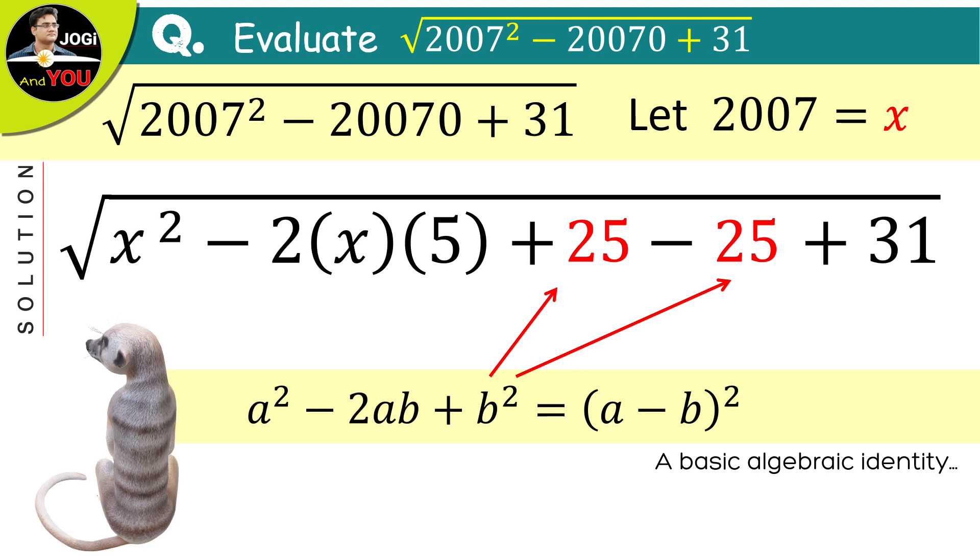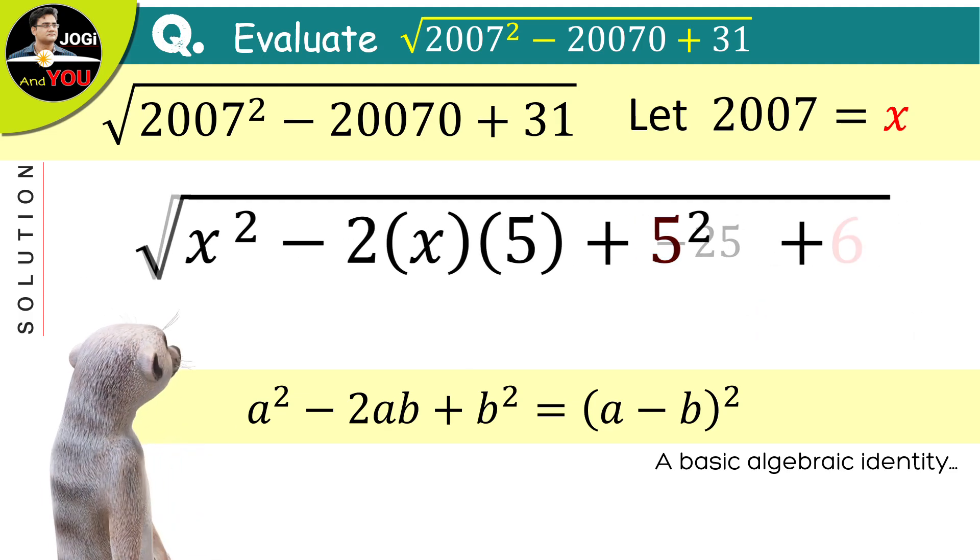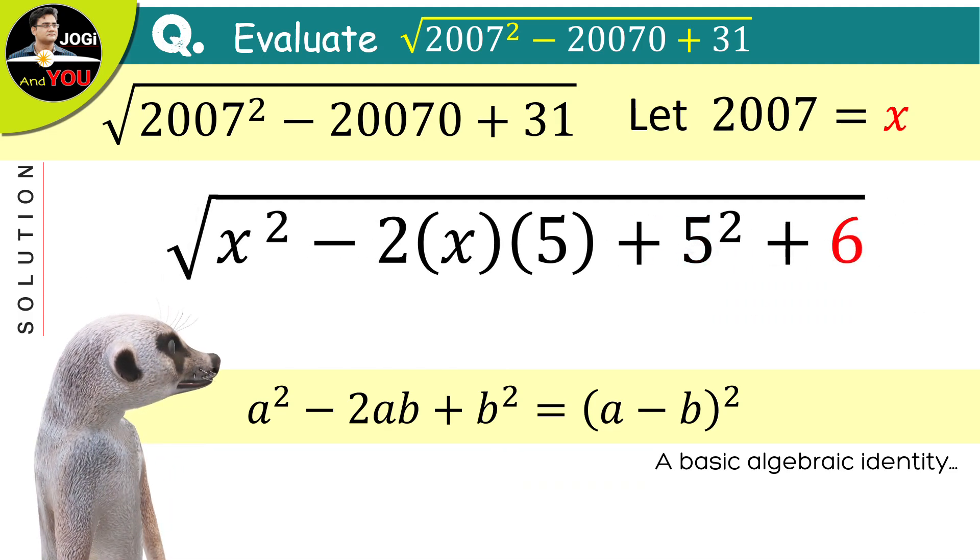The first 25 means 5 squares and the value of minus 25 plus 31 will be 6. Just like this. So now, after looking at the first three terms inside the radical sign, we can apply this algebraic identity.